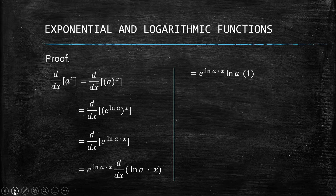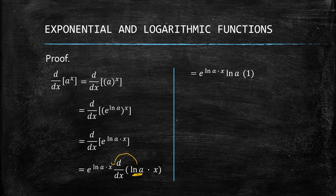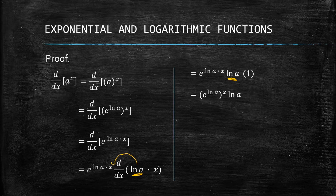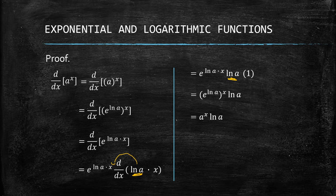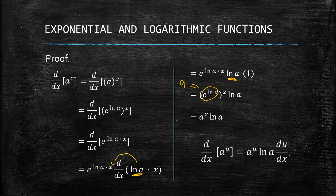The derivative of ln(a)·x is ln(a) times 1, since ln(a) is a constant and the derivative of x with respect to x is 1. We then reverse the substitution: e^(ln a) is just a, so we get a^x times ln(a). Generalizing with u as the exponent, the derivative of a^u equals a^u times ln(a) times du/dx.